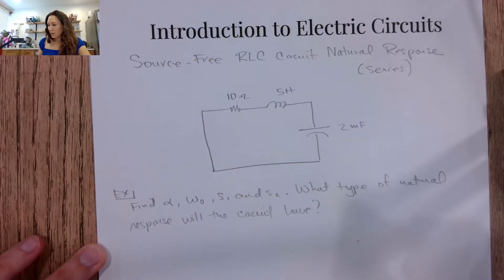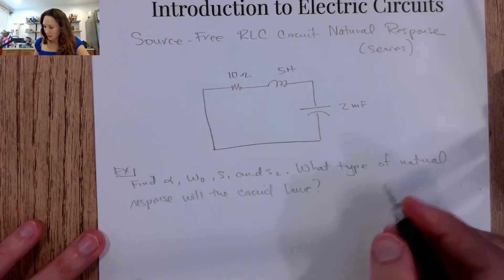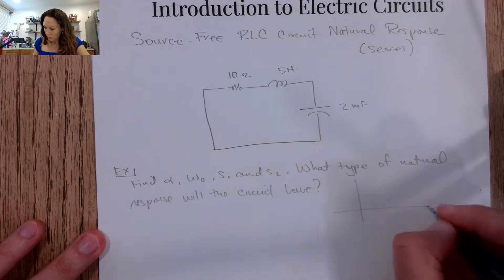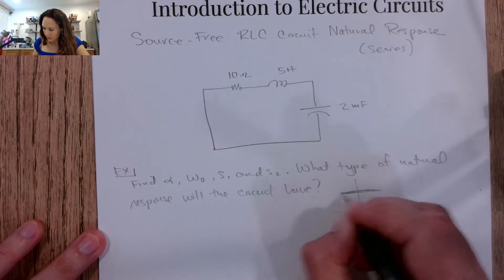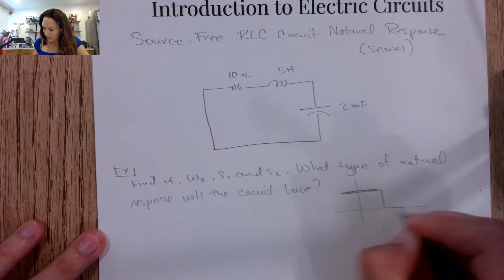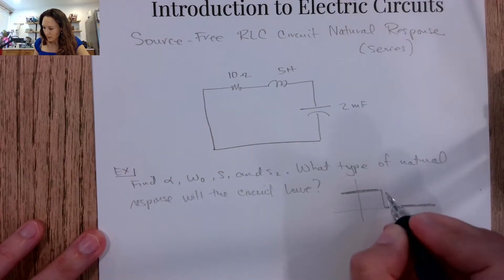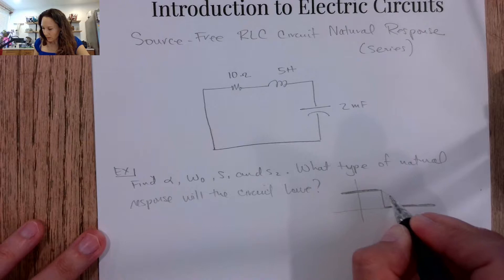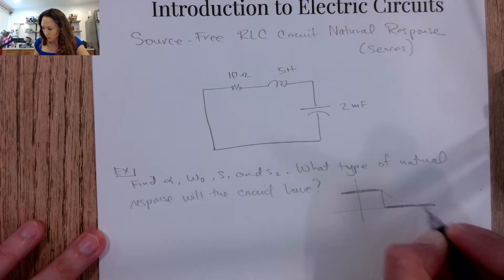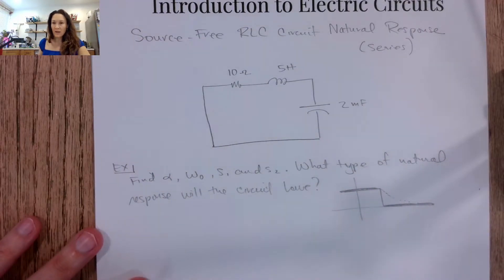Okay, so if you remember, natural response is the response when we turn off a source. So if this is our source and then suddenly it goes to zero, so we have zero voltage and zero current, there's going to be some response of our circuit that's going to be some sort of a decay. And we have some different cases.